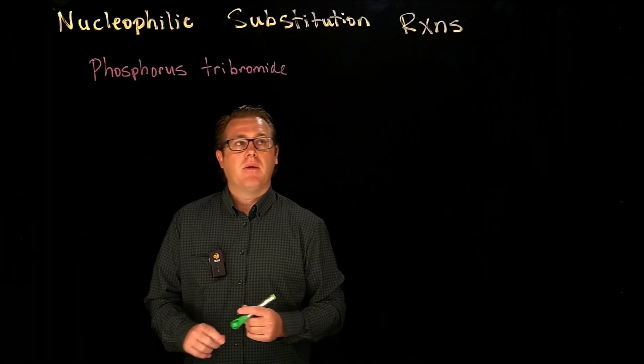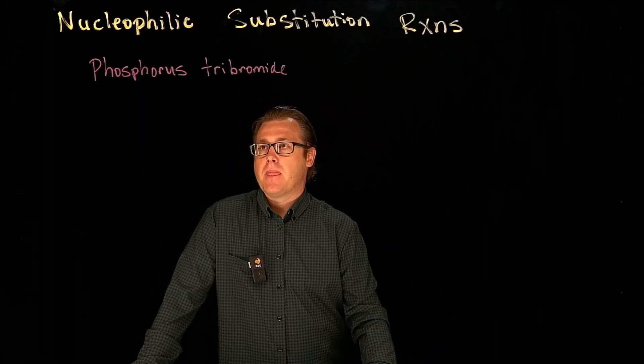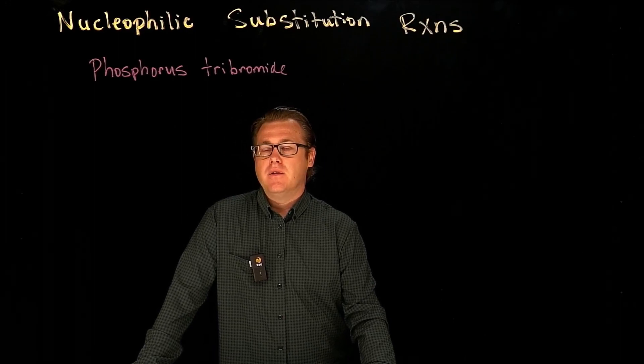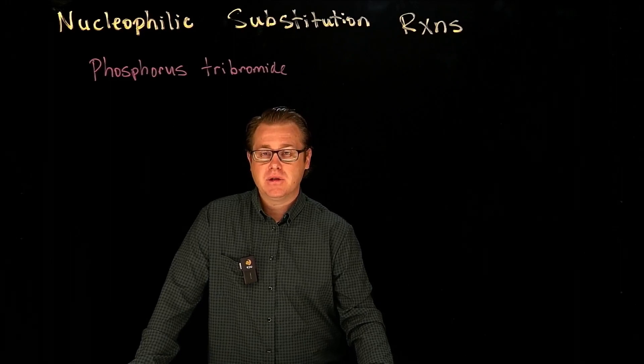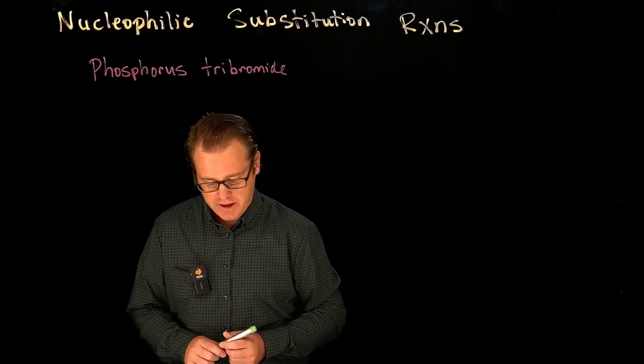The reaction we want to look at now is converting an alcohol into an alkyl halide using phosphorus tribromide.